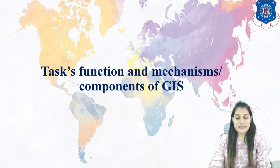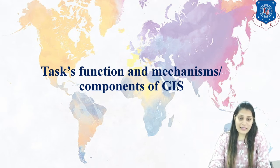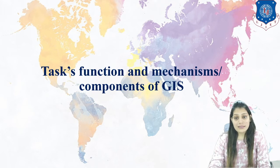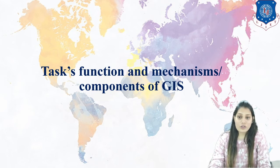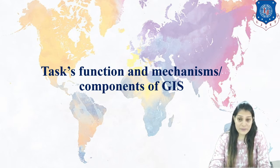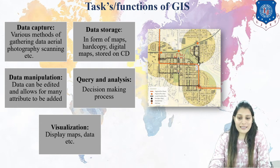Now we are going to see in detail the task functions and mechanism of GIS — how it works. This is very simple to understand: what are the tasks of GIS, how it is helpful, why it is helpful, what does it give us, and how it helps us to do the interpretation. In the previous session we discussed qualitative and quantitative analysis. If subjective and objective are not properly analyzed, then the software giving outputs in the form of maps is not useful. So the first thing is the functions of GIS, also called the tasks of GIS.